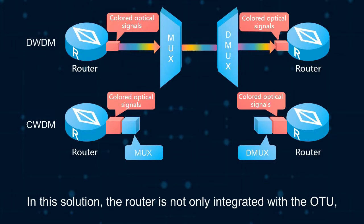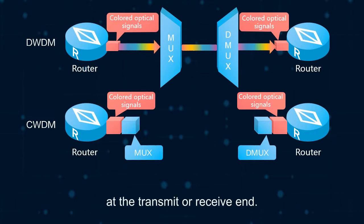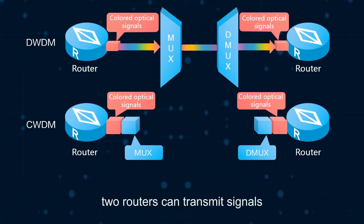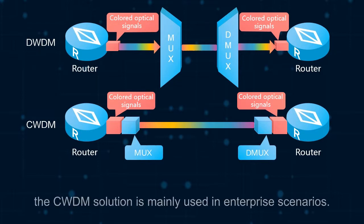In the CWDM solution, the router is not only integrated with the OTU, but also with the multiplexer and demultiplexer at the transit or received end. In this way, two routers can transmit signals through optical fibers without the help of a WDM device. Currently, the CWDM solution is mainly used in enterprise scenarios.